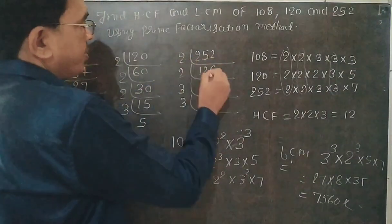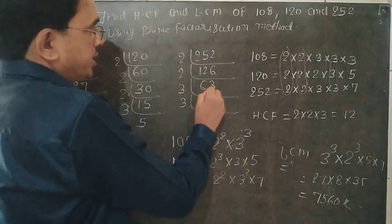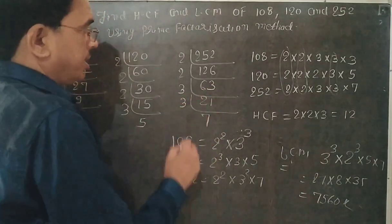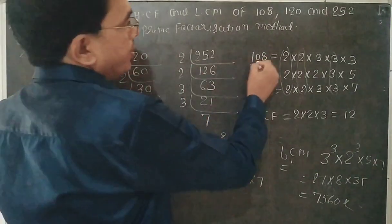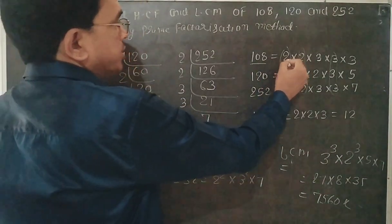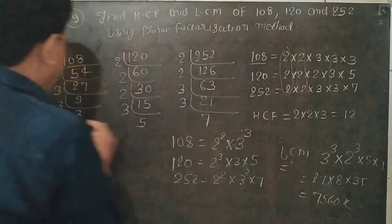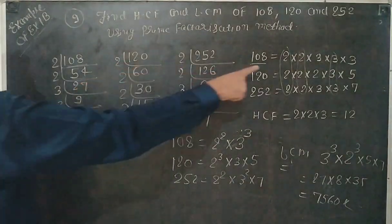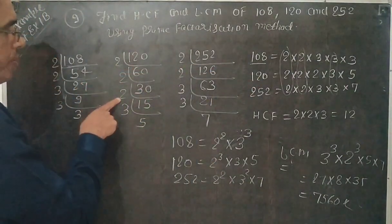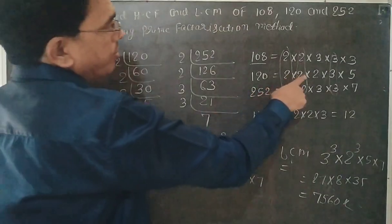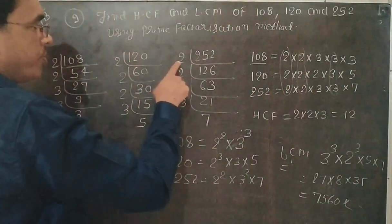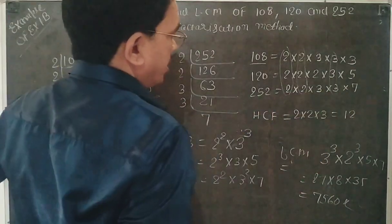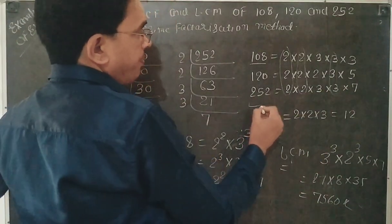Similarly, 252 divided by 2 gives 126, divided by 2 gives 63, divided by 3 gives 21, divided by 3 gives 7. Now arrange the results: 108 = 2 × 2 × 3 × 3 × 3; 120 = 2 × 2 × 2 × 3 × 5; 252 = 2 × 2 × 3 × 3 × 7. First we find the HCF.